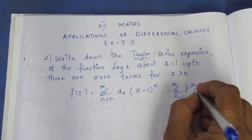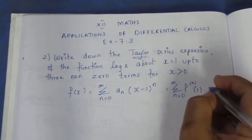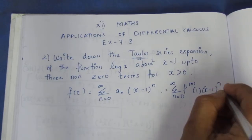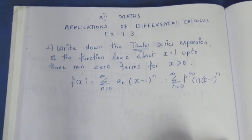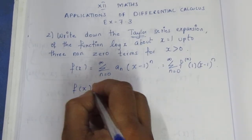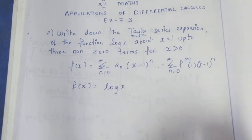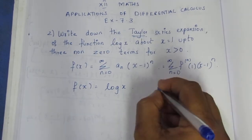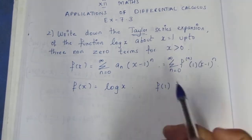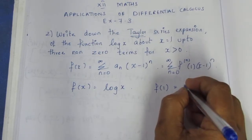So f of x is equal to log x. When x equals 1, f of 1 equals log 1, which equals 0.